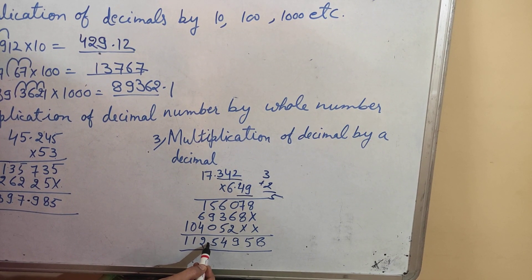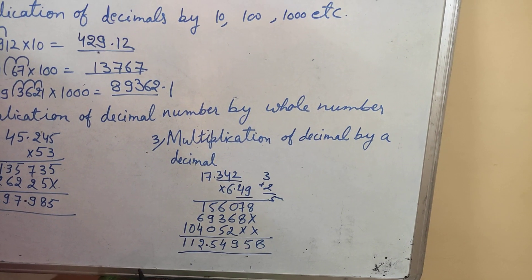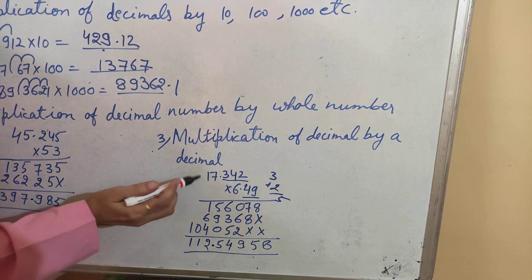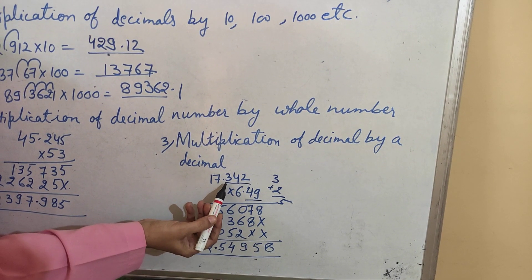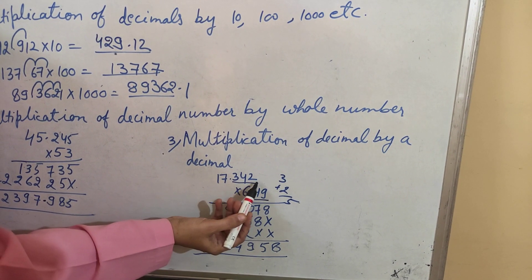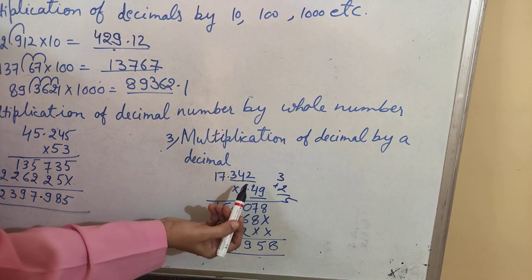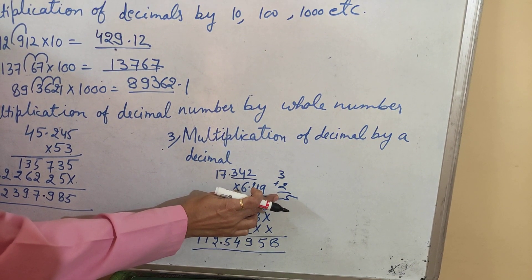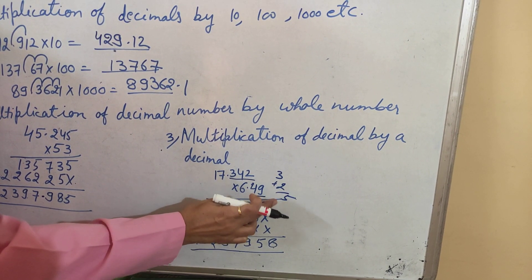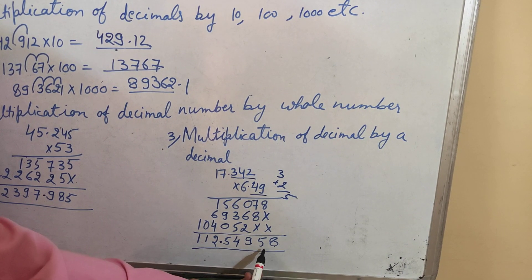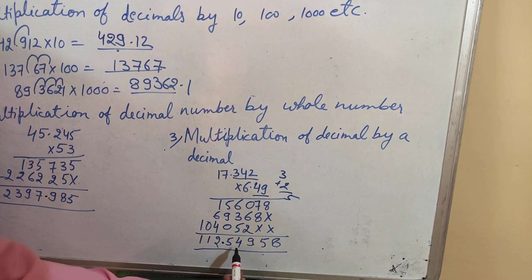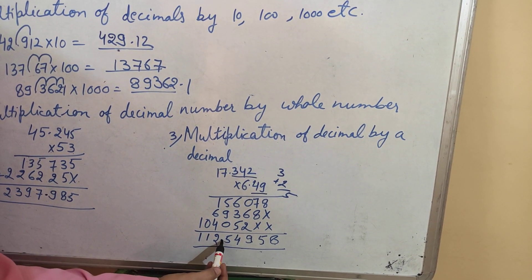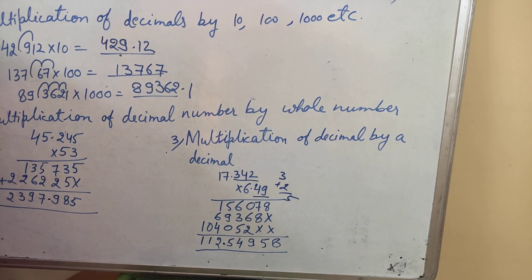After 5 digits, we have to put the decimal. To repeat: we have to count the decimal places of both the multiplier and multiplicand, then sum the decimal places. In the answer, we count that many places from the right side and put the decimal.